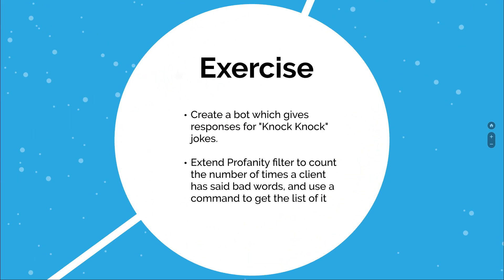I hope you have understood the chat processor pretty well. Let's go through a couple of exercises you can do on your own. First, you can create a bot which responds to knock-knock jokes — for example, when someone says knock-knock, the bot recognizes it and says who's there. This will help you build intuition for the chat processor. Second, you can extend this profanity filter system to count the number of times a client has said any bad words, and then enable an admin to get that list using a command.